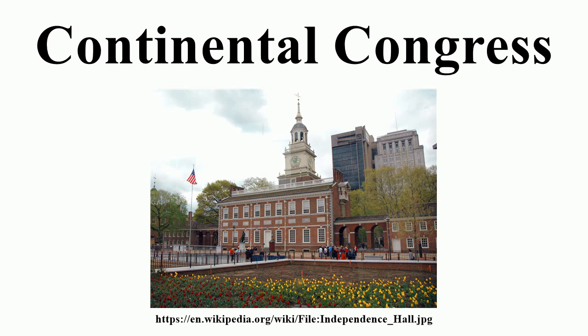Although the delegates were divided early on as to whether to break from crown rule, the Second Continental Congress on July 2, 1776, gave a unanimous vote for independence, issuing the Declaration of Independence two days later, declaring themselves a new nation, the United States of America. It established a Continental Army, giving command to one of its members, George Washington of Virginia.